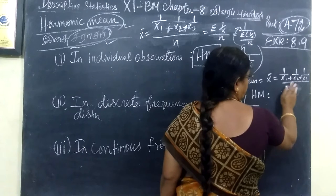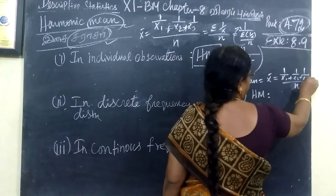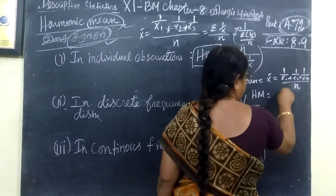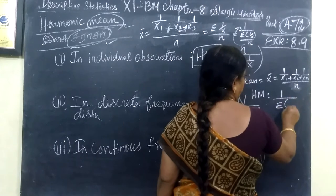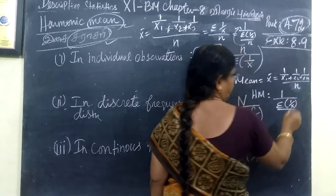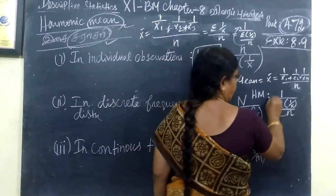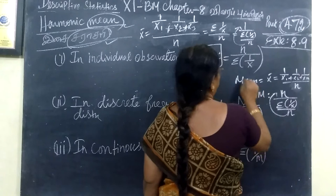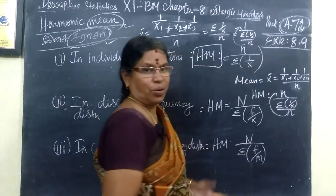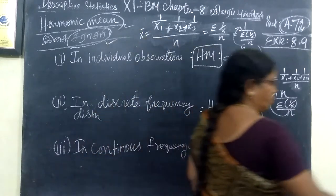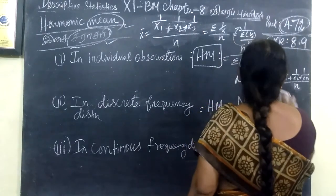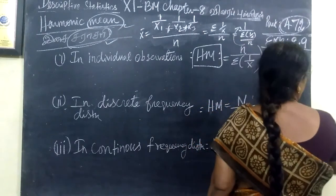Then what happens? Here we have n. Here we have reciprocal of sigma of 1 by x divided by n. Here we have n by sigma of 1 by x. We are confused, but this is not a problem. I will explain the formula.